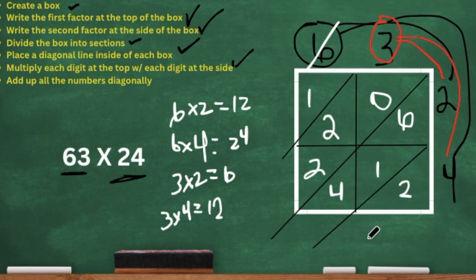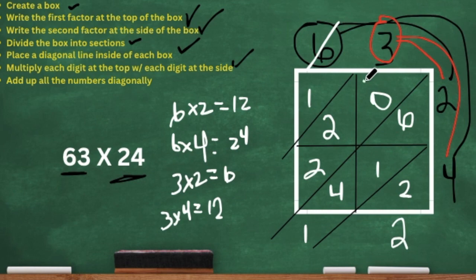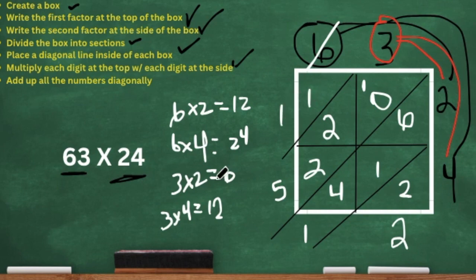So now we're going to add our numbers diagonally. We have two plus nothing, which is two. Now this section diagonally, we have the six, the one, and the four. Six plus four is 10, plus the one is 11. So that's a two-digit number — I'm going to put the one down here and carry the other one over. In the next section we have a two, a two, a one, and a zero. Two plus two is four, plus the one, which is five. And then one plus nothing, which is one. So our final digits are 1, 5, 1, 2 — our final answer is 1512.